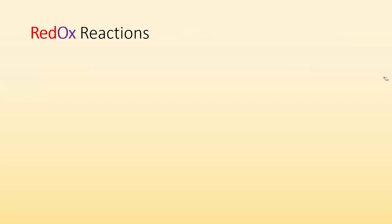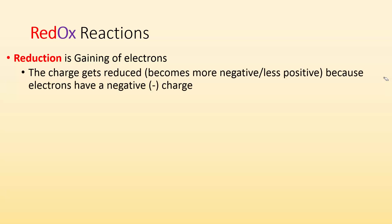Redox reactions — you can see I split this word up into two different colors. The reason for that is there are two things happening. First one is reduction, which is where we get the 'red' from, and it's the gaining of electrons. This is counterintuitive because you think reduction should mean less. The reason is that the charge gets reduced. Electrons have a negative charge, so as we gain electrons, our charge is going to get reduced.